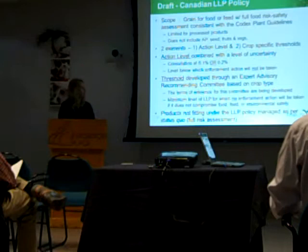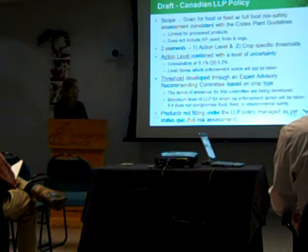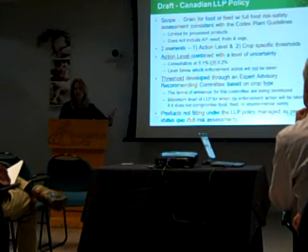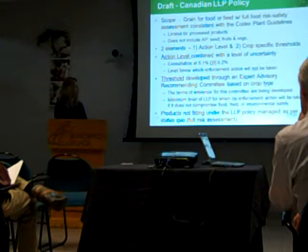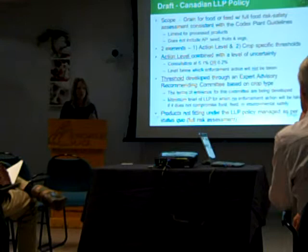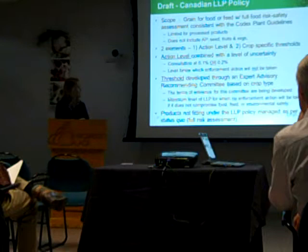The elements include both an action level and a crop-specific threshold. The action level — the question is whether it should be 0.1 or 0.2. The idea of the action level is that because it's so low, it's mainly to get rid of dust. It also includes a level of uncertainty, which talks about laboratory testing and making sure we account for the variability within testing. It's a level below which enforcement action will not be taken.